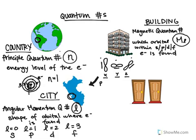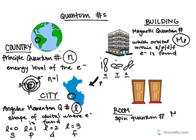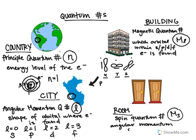The last part of this analogy is the room in which Jack 1 and Jack 2 lived. This refers to the spin quantum number, represented by M sub S. M sub S is one of the easier of the four quantum numbers. It describes the spin angular momentum of the electron, and it is either plus one-half or minus one-half.